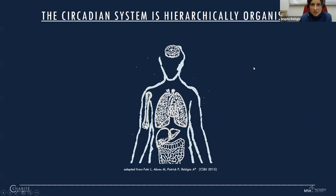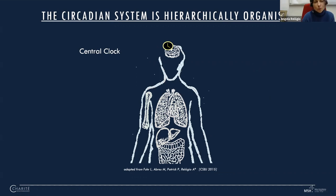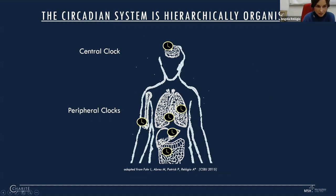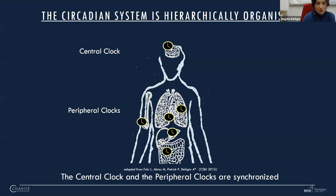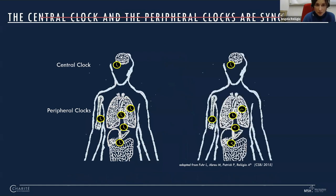At the systems level, the circadian system is hierarchically organized. You have a main clock in the brain — the suprachiasmatic nucleus — formed by coupled neurons, which is very amenable to modeling as coupled oscillators. But pretty much every cell in your body has a clock — the peripheral clocks — and crucially, central and peripheral clocks are synchronized. This isn't always the case; it could be that your clocks run out of sync, as happens during jet lag. The reason you feel bad during jet lag is exactly that the clocks lose synchrony.